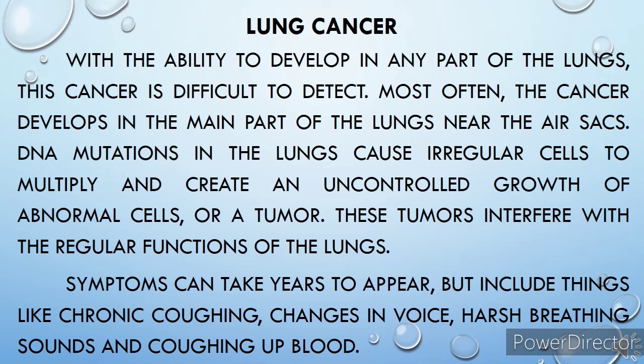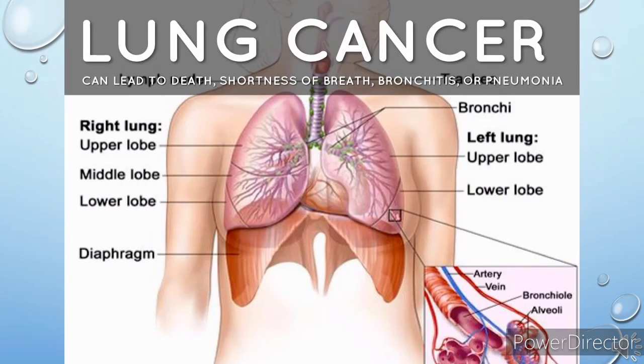Lung cancer. With the ability to develop in any part of the lungs, this cancer is difficult to detect. Most often, the cancer develops in the main part of the lungs near the air sacs. DNA mutations in the lungs cause irregular cells to multiply and create an uncontrolled growth of abnormal cells, or a tumor. These tumors interfere with the normal functions of the lungs. Symptoms can take years to appear but include chronic coughing, changes in voice, harsh breathing sounds, and coughing up blood. Lung cancer can lead to death, shortness of breath, bronchitis, or pneumonia.